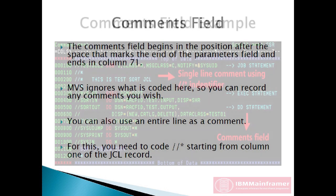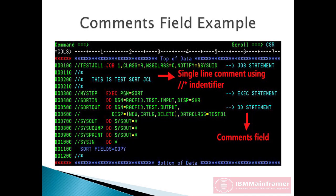You can also use an entire line as a comment. For this, you need to code two forward slashes and asterisks starting from column 1 of the JCL record.